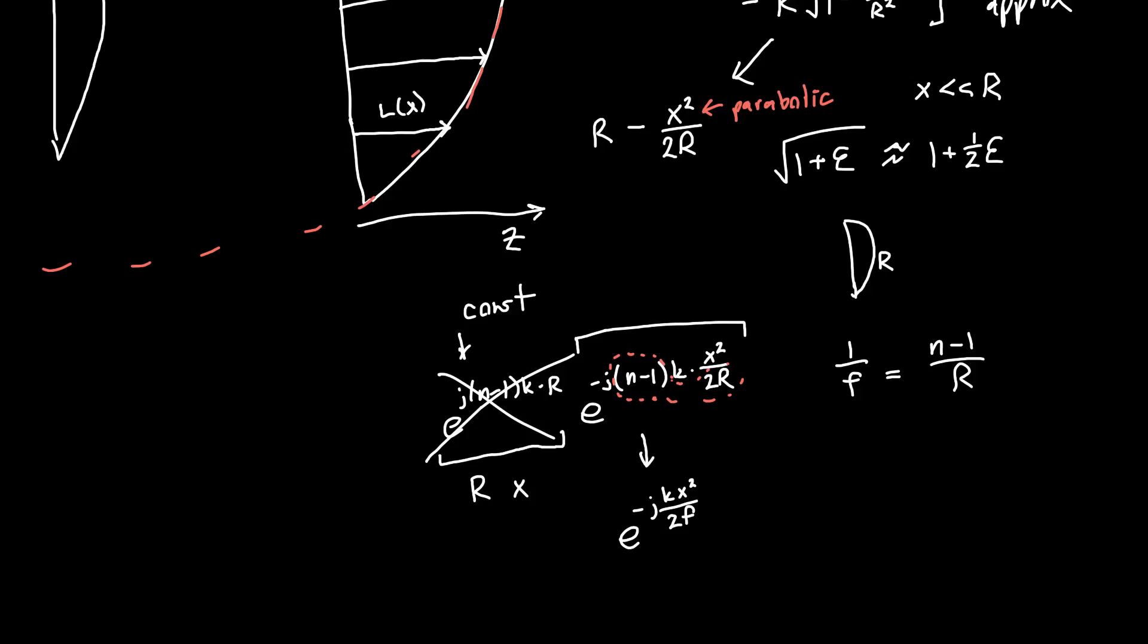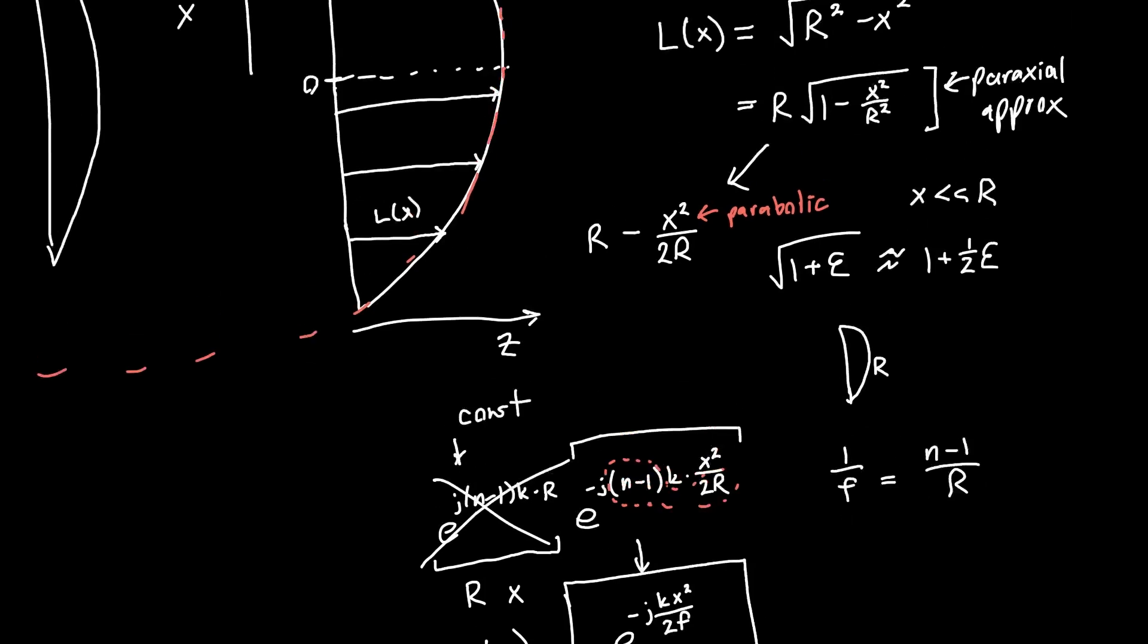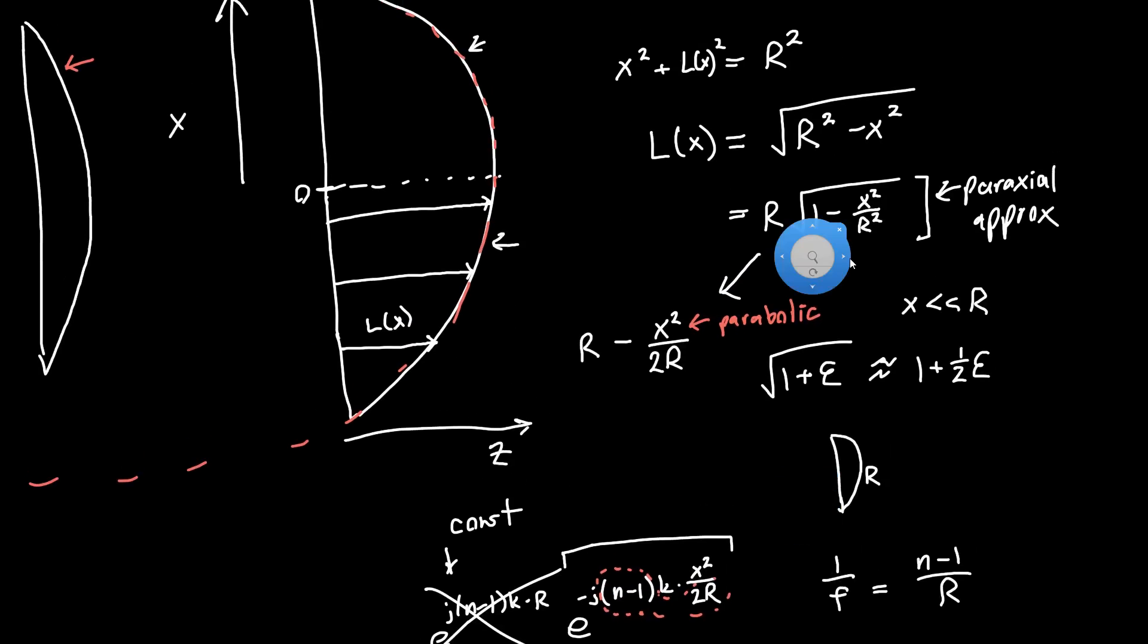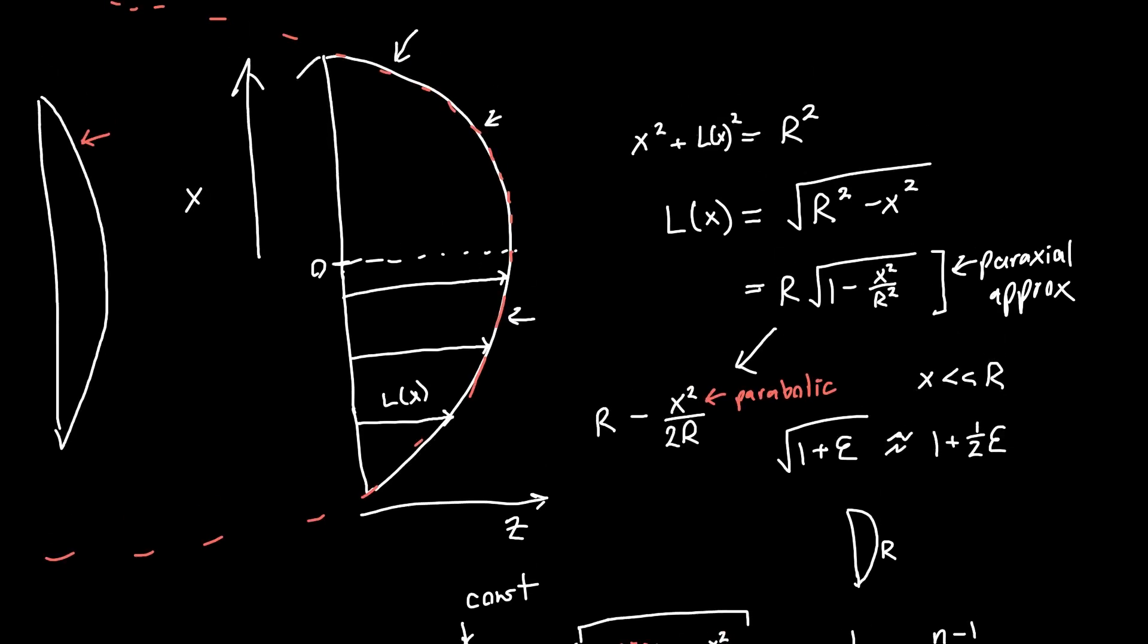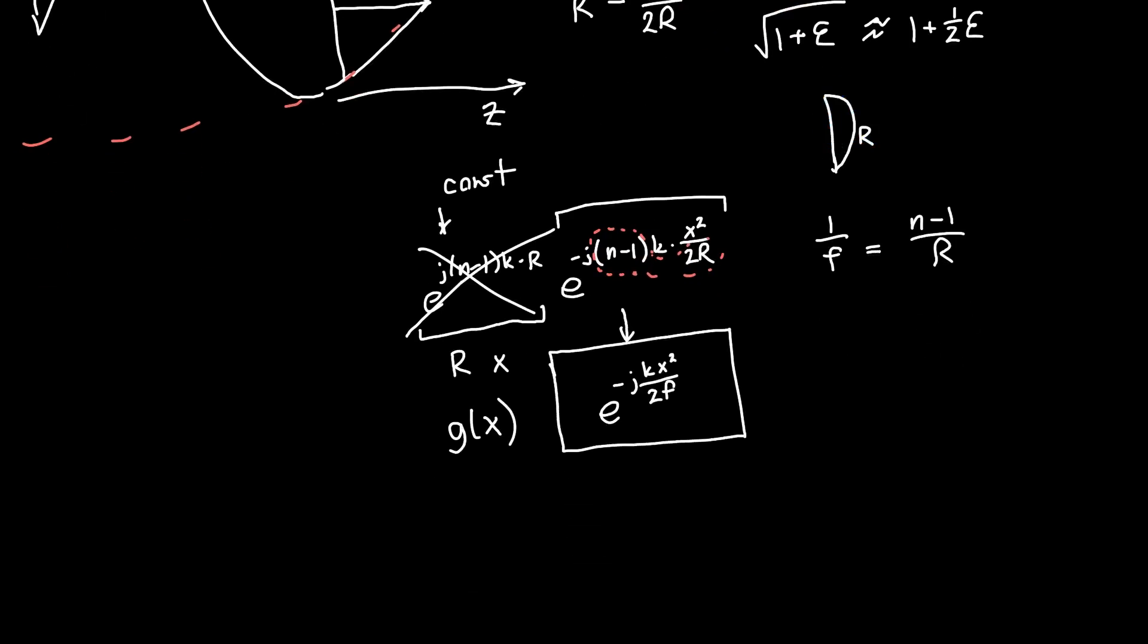This is our aperture function. This is g of x for a lens. We figured it out just for a plano convex lens, but you might imagine if you put two plano convex lenses right next to each other, you just have another term in terms of, so instead of one over r, you'd have one over r one plus one over r two, or minus, depending on the sign convention you're using. But you could still make this substitution in terms of the focal length, and you'd get the same exact aperture function.